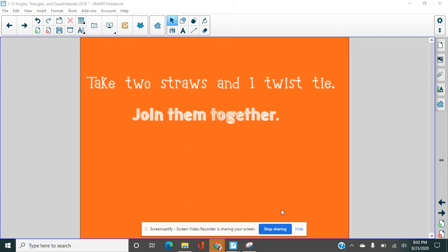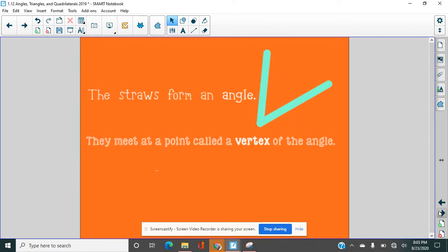Throughout this lesson, you're going to see us reference straws. Now, if you don't have straws at your house or where you're working, that's fine. Grab two pencils, grab two pens, just two of anything that you're going to be able to kind of connect. You don't have to have a twist to connect them. You can hold them together with your fingers. Go ahead and grab that.